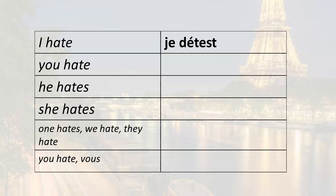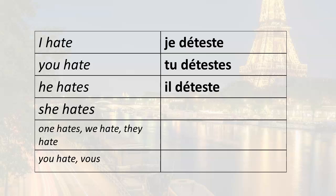Remember, all you have to do is just add the ending to the root. I hate — je déteste. You hate — tu détestes. He hates — il déteste. She hates — elle déteste.